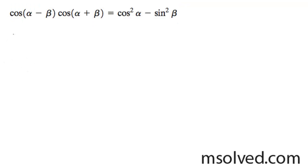I'm going to distribute these. So I get cosine alpha cosine beta plus sine alpha sine beta times cosine alpha cosine beta minus sine alpha sine beta.